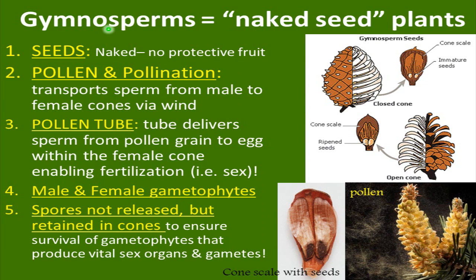The gymnosperms are the naked seed plants — their seeds are naked; they do not have a protective fruit, although they can be eaten. They have pollen and pollination, which transports the sperm from the male to female cones via wind and somewhat via gravity. The pollen tube is a tube that delivers the sperm from the pollen grain to the egg within the female cone, enabling fertilization.